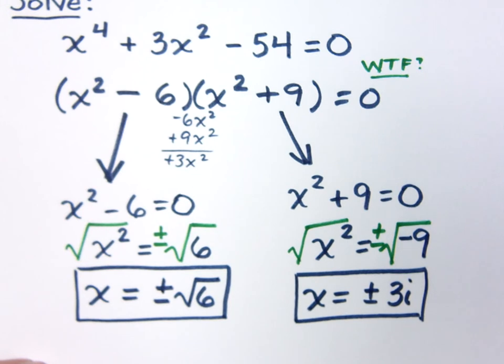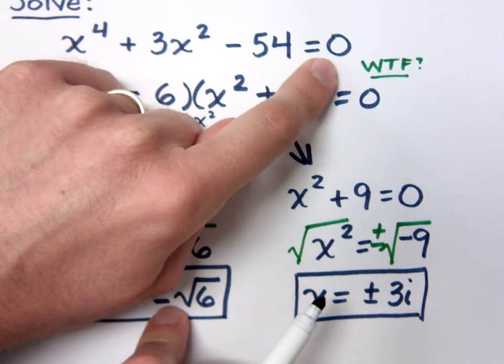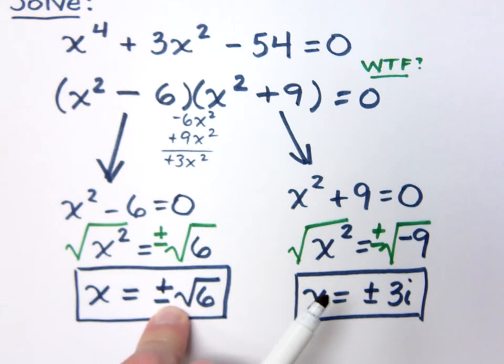You'd only see two of these guys, right? You would only see plus or minus the square root of six if you were to graph this guy. Where does this guy equal zero? Which, in other words, means where does it hit the x-axis? It would hit it at plus or minus the square root of three. You would not see it hitting plus or minus three i.